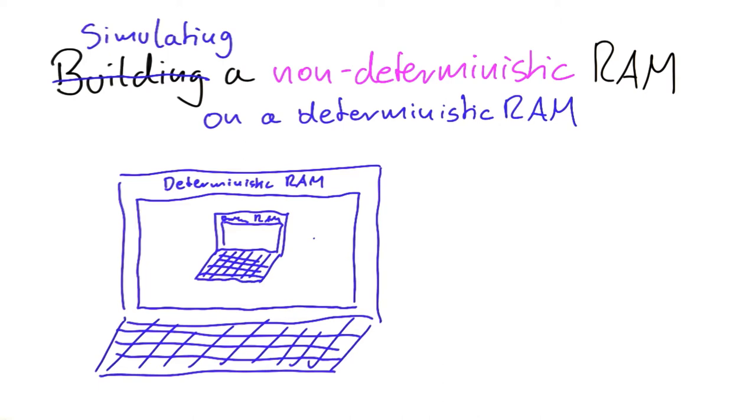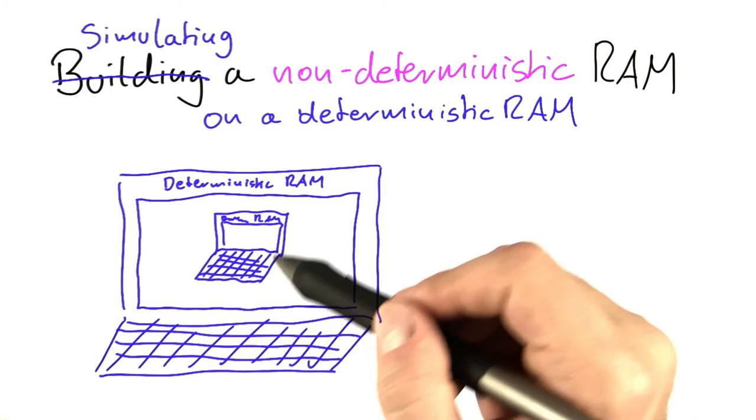you have a deterministic RAM. And of course, it's branded as a deterministic RAM. And on that machine, you do a simulation of another deterministic RAM.